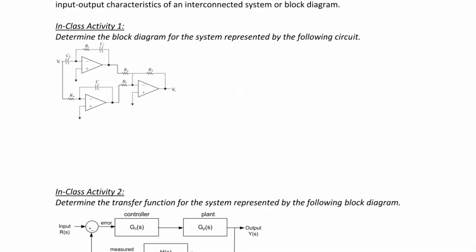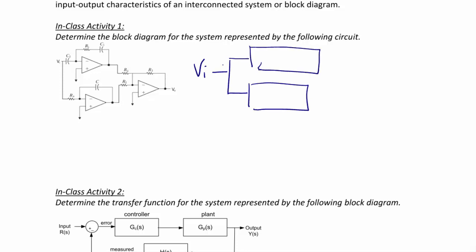In Class Activity 1, determine the block diagram for the system represented by the following circuit. Here we have three operational amplifiers that are cascaded together, and we can make this a block diagram by noting that the input voltage is VI. The gain for the op amp at the top, since it's an inverting amplifier, would be negative R1 plus 1 over SC1 divided by the input impedance 1 over SC2.